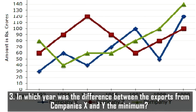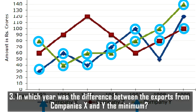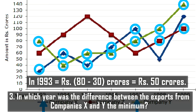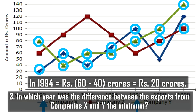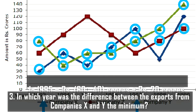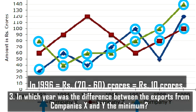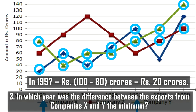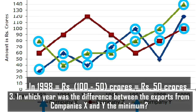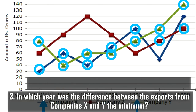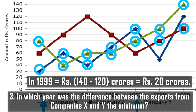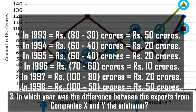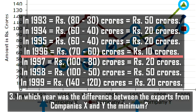The next question asks: in which year was the difference between exports from companies X and Y the minimum? Taking the values each year: 1993 gives 80 minus 30 equals 50 crores; 1994 gives 60 minus 40 equals 20; 1995 gives 60 minus 40 equals 20; 1996 gives 70 minus 60 equals 10; 1997 gives 100 minus 80 equals 20; 1998 gives 100 minus 50 equals 50; 1999 gives 140 minus 120 equals 20 crores. The difference is minimum in 1996.